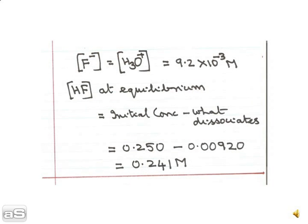F minus equals H3O plus, which is 9.2 times 10 to the power of minus 3 molar.